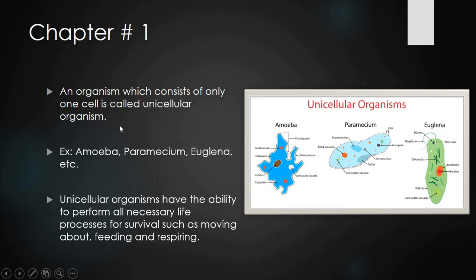These are the unicellular organisms: amoeba, paramecium, and euglena. Amoeba and paramecium are animal-like unicellular organisms. Euglena makes its own food, so it is plant-like. It also has chloroplasts, which indicates it is like a plant. Paramecium sometimes also makes its own food, so it can behave like both animal and plant, while amoeba only behaves like an animal.